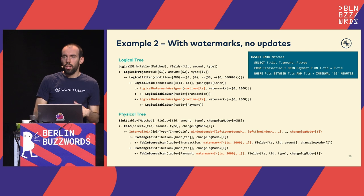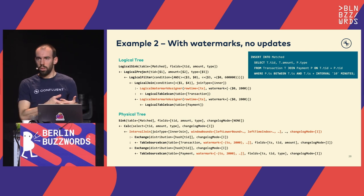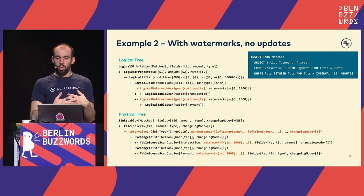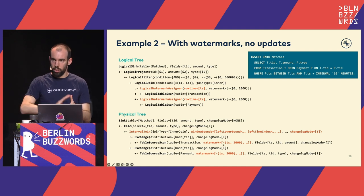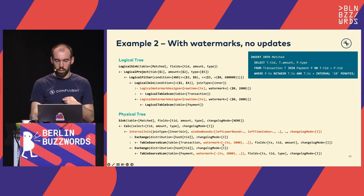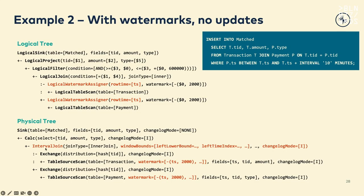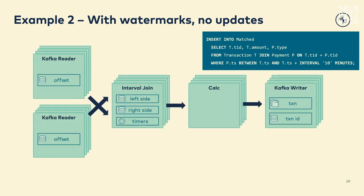Taking example two — with watermarks but no updates, so changelog mode is still insertion. You can see in the explain output that the watermark has been pushed into the source, so the source knows about watermarks. The join algorithm has changed: because we have watermarks, we can do more efficient execution, so we use an interval join — which is very state efficient.